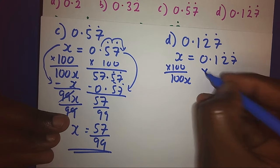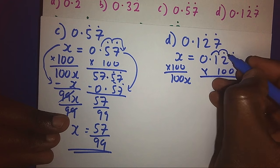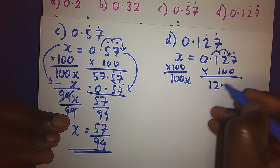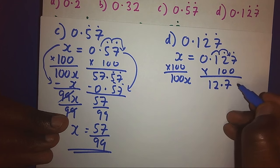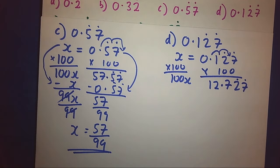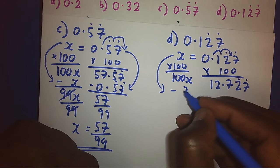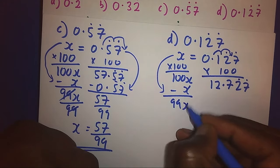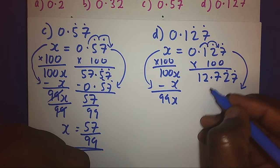Times 100, it means one step, two steps, we shall get 12.7. Bring back the two recurring numbers, that is 2 and 7. Then we shall subtract with our starting statement. We get 99. We shall subtract with our starting statement, that is 0.127.